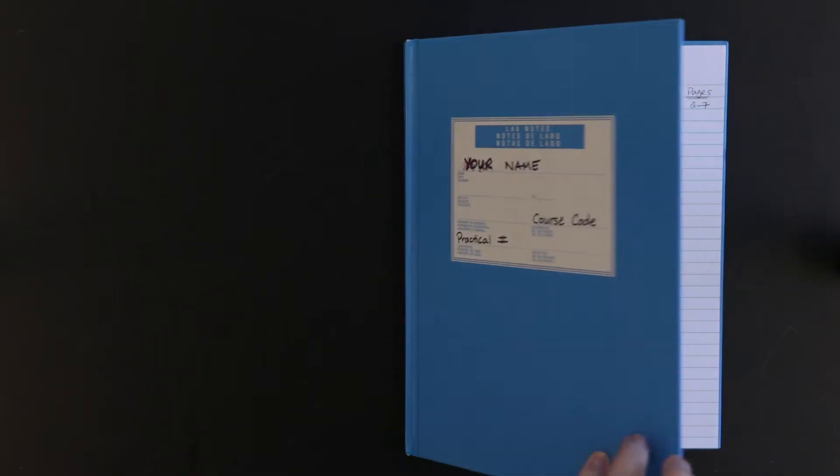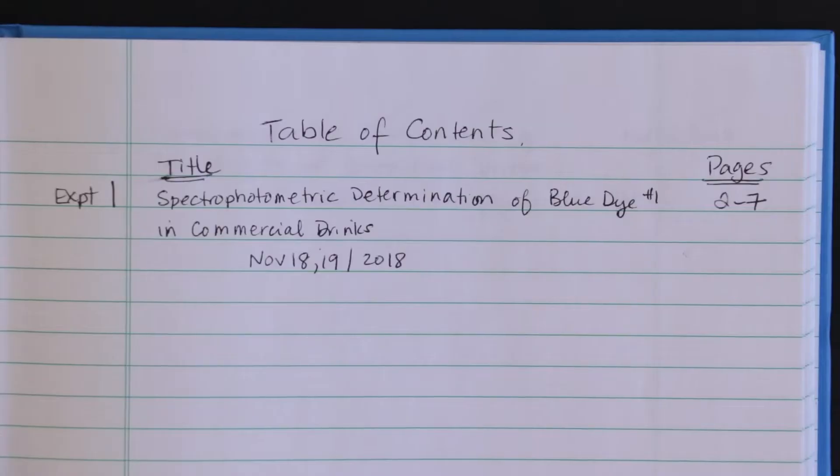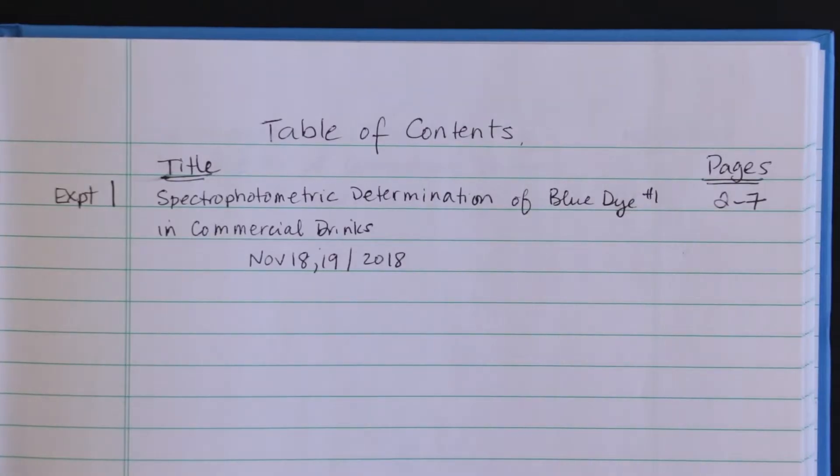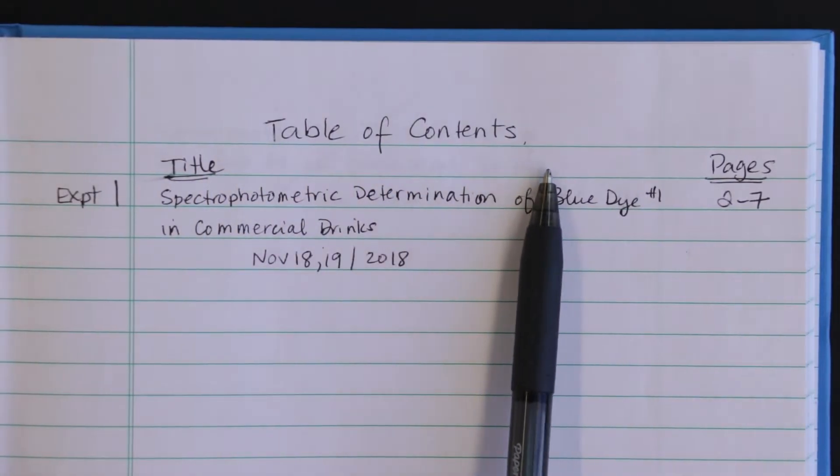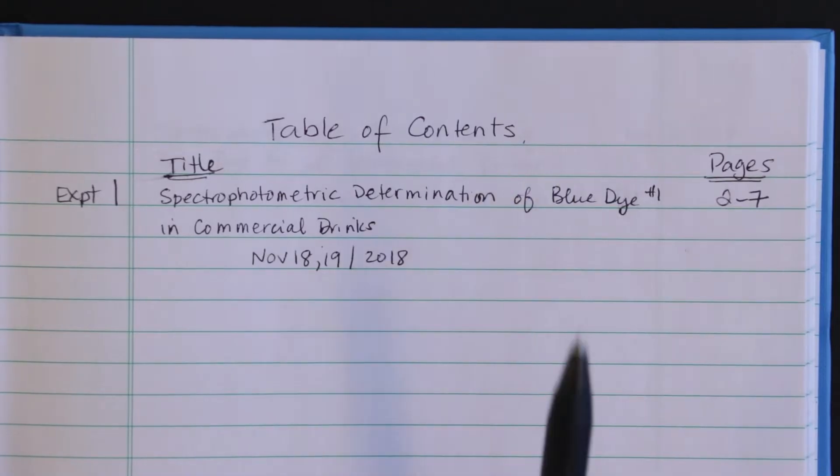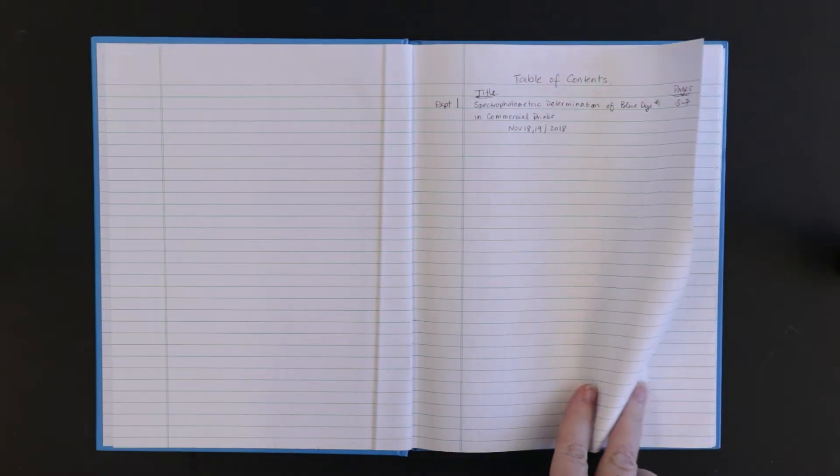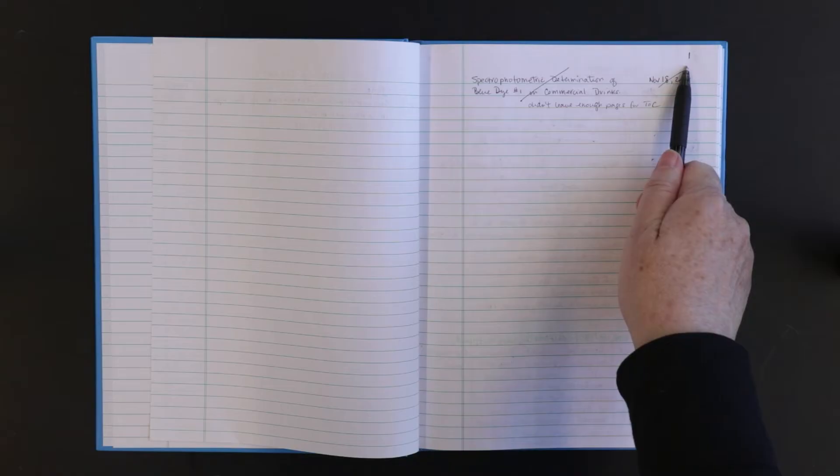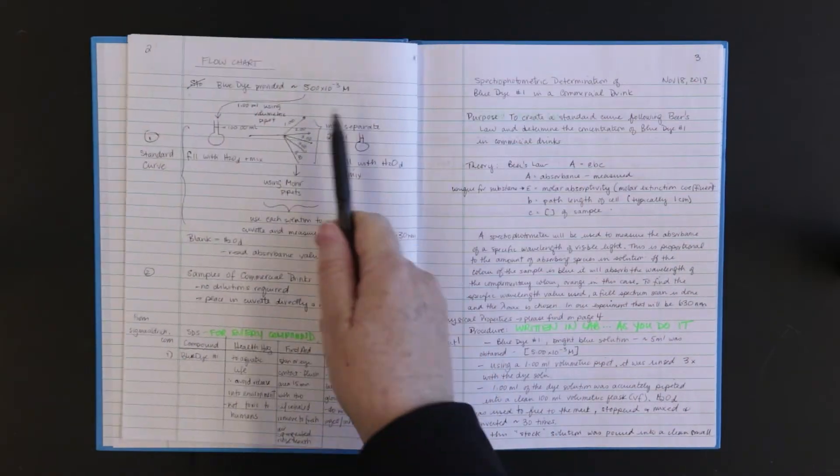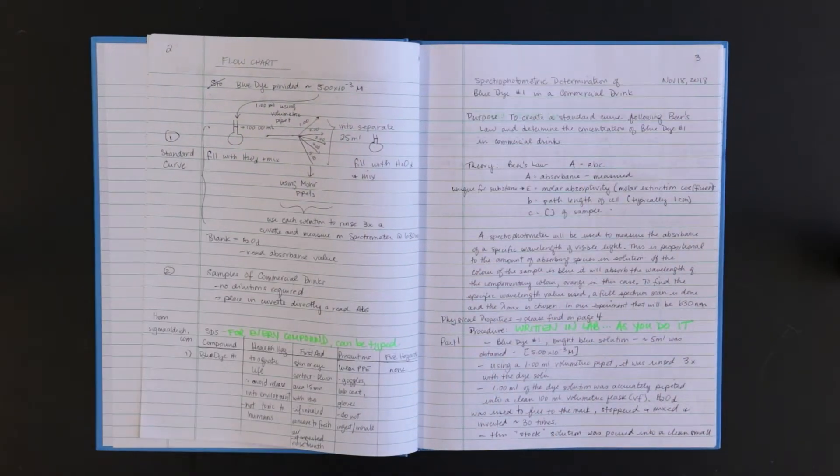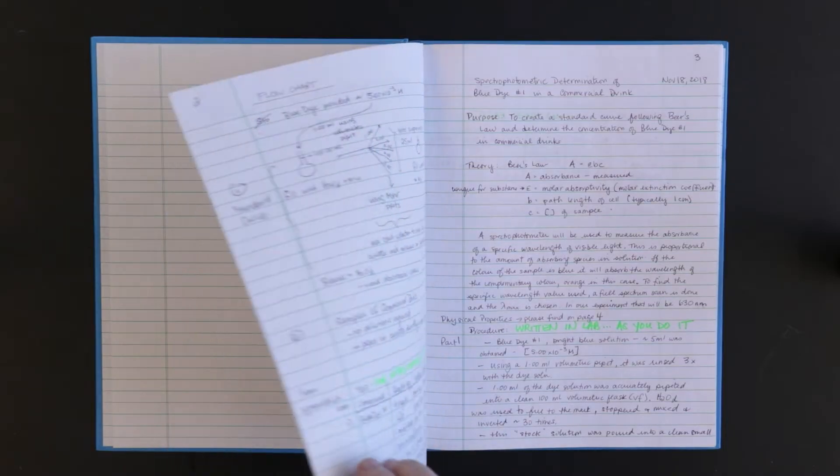Leave two blank pages at the beginning of your notebook so you can create a table of contents. This should include the title, page numbers, and the dates. Pages should be numbered from beginning to end of the book in increasing value. Do not use page number one when you start a new experiment. The reader will be able to find it based on the table of contents.